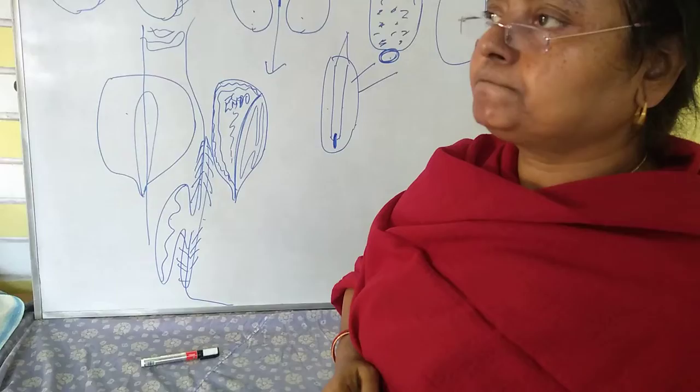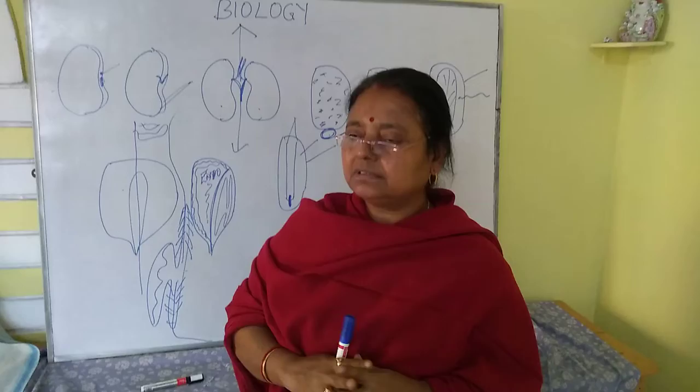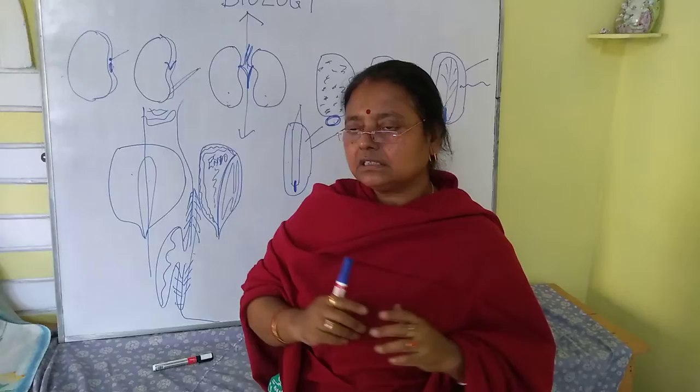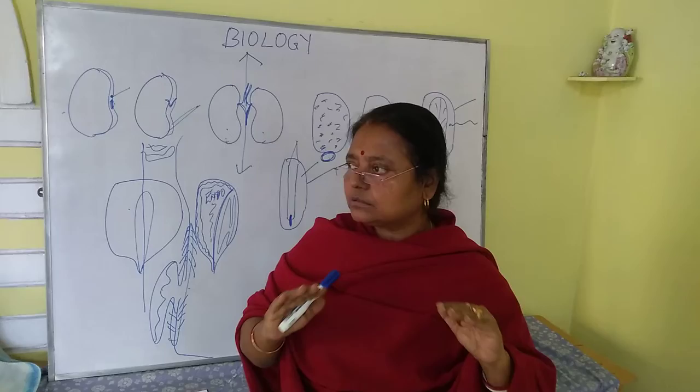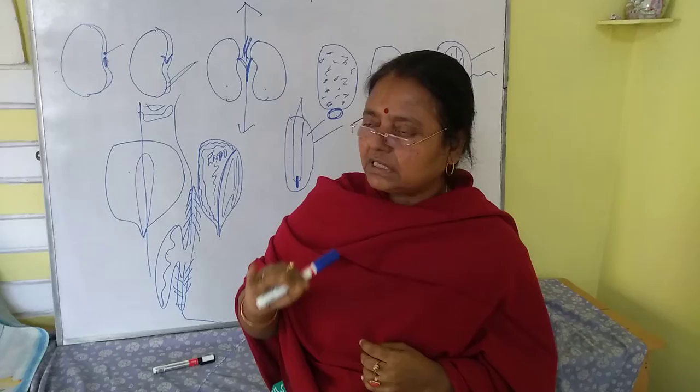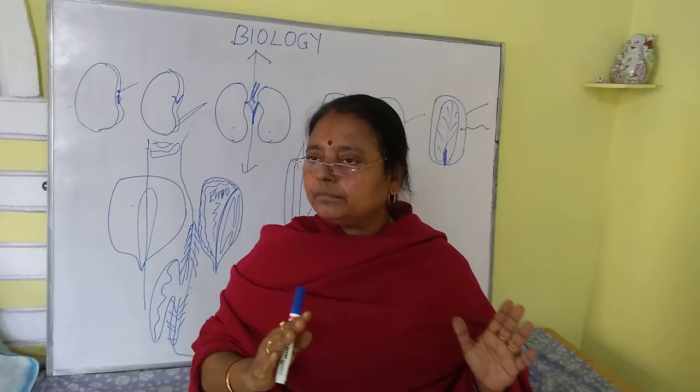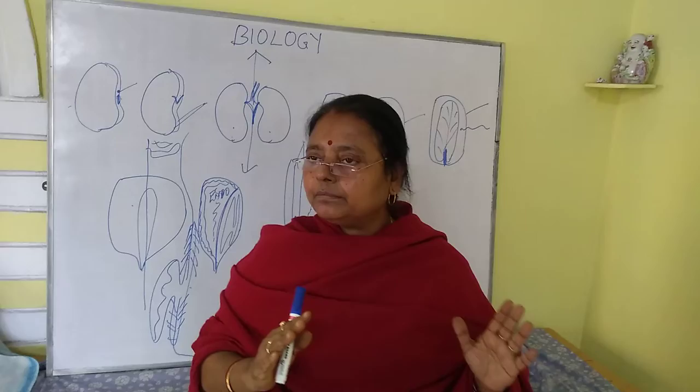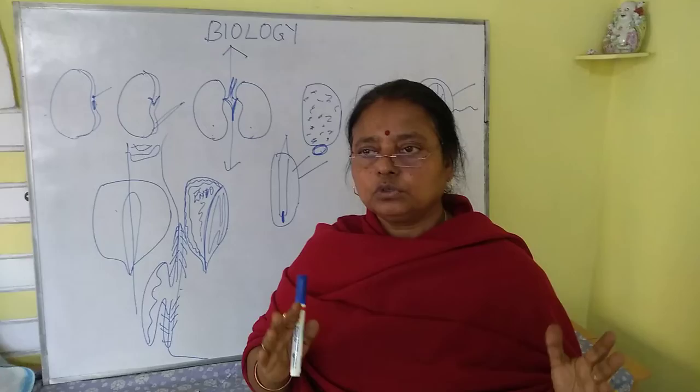In seeds, there are two terms: dormancy and quiescence — both mean inactive. The difference is that dormancy is due to an internal cause and quiescence is due to an external cause. In both cases, there is a slow metabolic rate. Quiescence is used when conditions are not favorable; if you give the favorable conditions, the seed will be able to grow. But if in spite of giving favorable conditions it does not grow, then we call it dormancy.